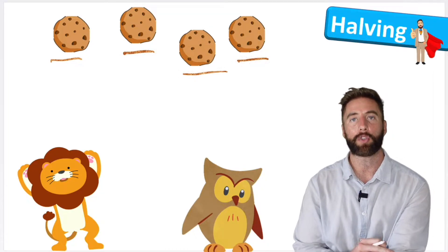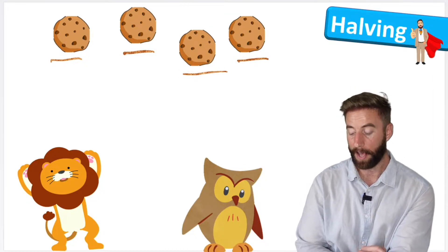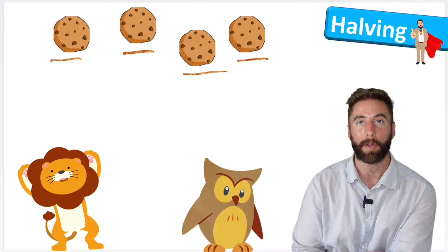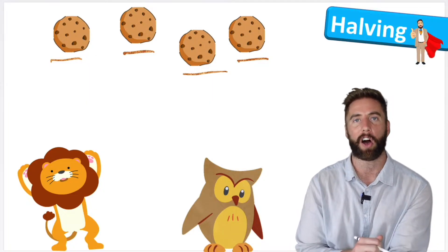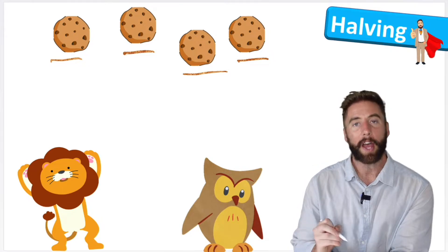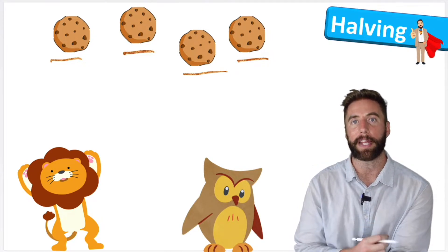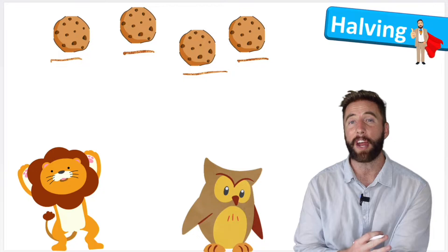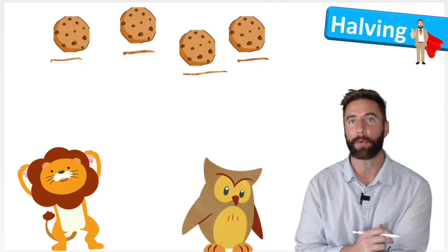I want to try and share them evenly between Mr. Lion and Mrs. Owl. So I have two choices — I could either halve or double. Let's see what I mean by that. I can halve, and halving really means sharing evenly between two groups.